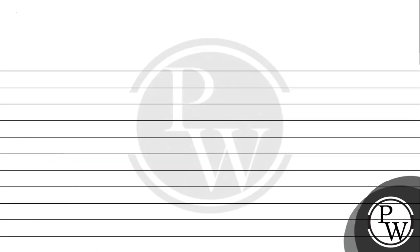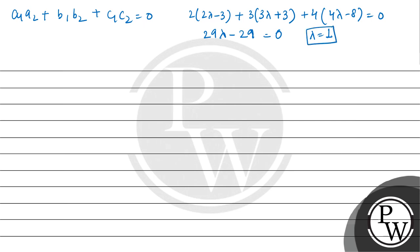Now, as both the lines are perpendicular, sum of the product of their direction ratios is zero. So that means 2(2λ - 3) + 3(3λ + 3) + 4(4λ - 8) = 0, which comes out to be 29λ - 29 = 0. So lambda's value is 1.